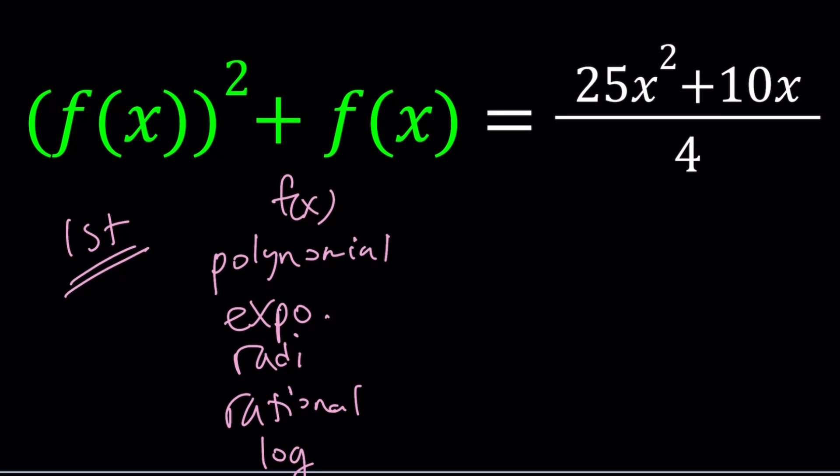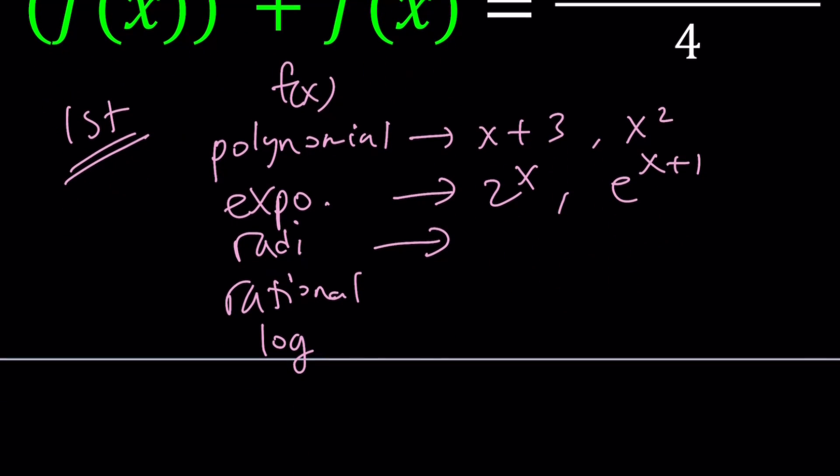So polynomial is something like x+3, simple, or x². Can it be one of those? Or exponential is going to be like 2^x or e^(x+1). Obviously, there are millions of examples, maybe infinitely many. Radical is going to be something like √(2x-1). Rational is going to be like (x+1)/(x-3). Remember the asymptote, the end behavior, and so forth. And log is just going to be ln(x). Make sense?